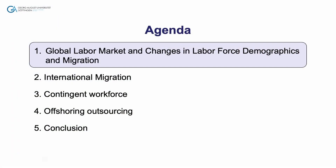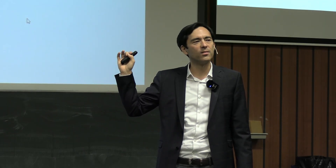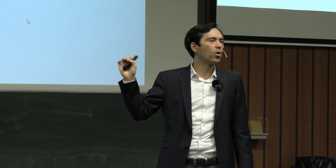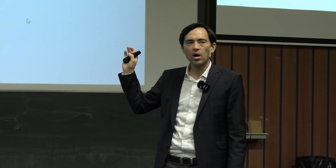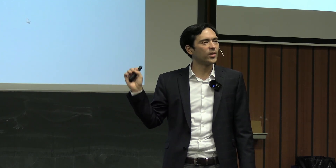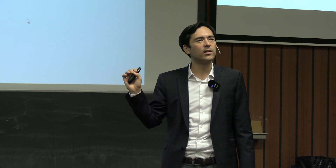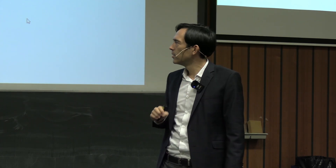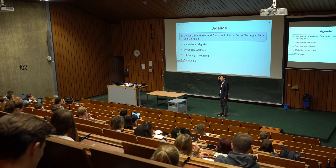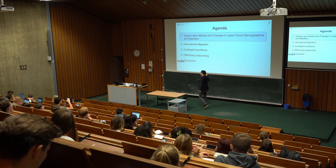Today's session is structured into four main points. First, general basic trends about the global labor market, including changes in labor force demographics and migration. Second, a specific look at international migration, which is a very important topic for Germany, other developed and developing nations, and for multinational enterprises. Third, the contingent workforce, a trend relevant over the past 10–20 years for multinationally operating organizations. And fourth, offshoring and outsourcing.